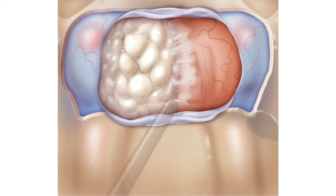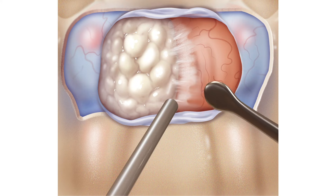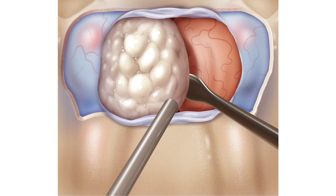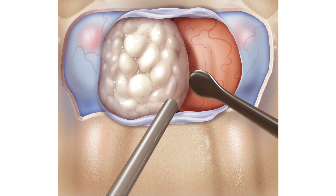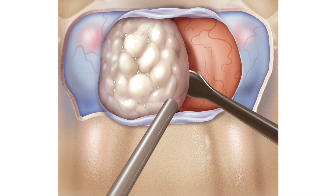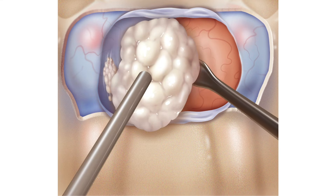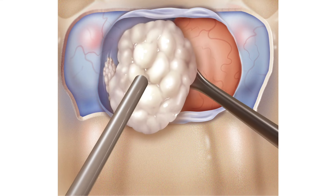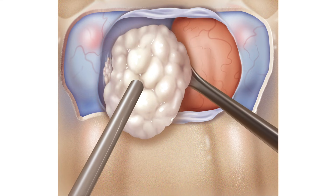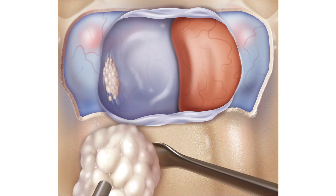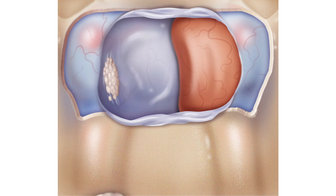By identifying this interface between both the pituitary gland and the tumor, we can develop an accurate plane of dissection to separate the tumor away from the pituitary gland. Whenever possible, we aim to perform an extracapsular dissection of the tumor to accurately separate it from the pituitary gland.